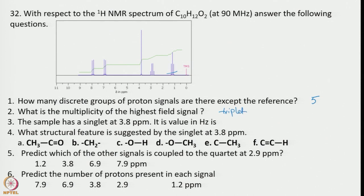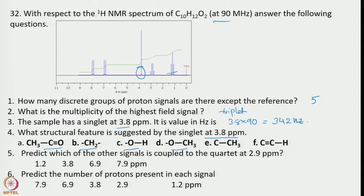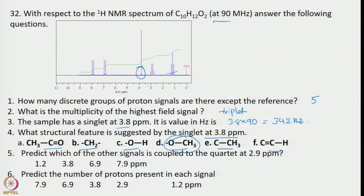The sample has a singlet at 3.8 ppm. To convert ppm to hertz we multiply by field strength 90, so 3.8 × 90 = 342 Hz. The structural feature suggested by the singlet at 3.8 ppm: since it is not coupled with any other proton, there must be an electronegative atom between two carbon atoms. Here the heteroatom is oxygen, so it has to be OCH3.